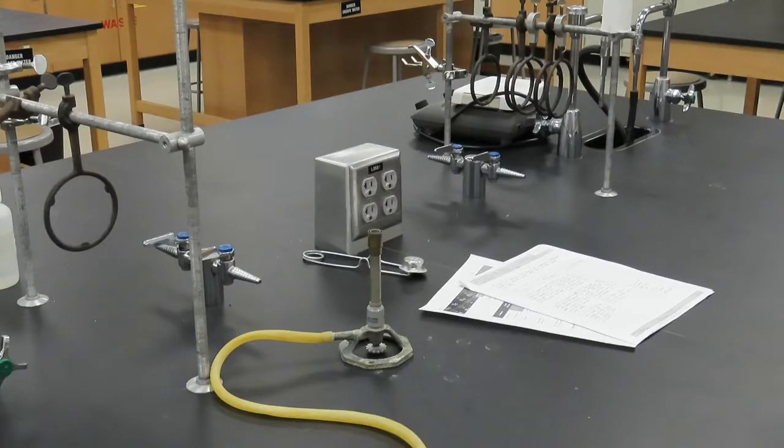A Bunsen burner is commonly used in a chemistry lab to produce a flame with an adjustable height and temperature. These two properties of the flame are controlled by the burner's gas valve and collar.